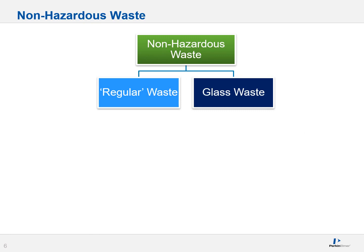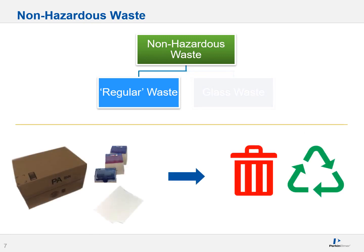Regular waste would be boxes, cartons, containers, paper — items that you in your home environment would usually place in a trash can. These can, for the most part, be disposed of as you would anywhere else. Throw them in the trash or recycle them if you can.